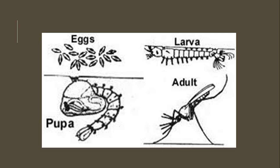Now let's summarize. Anopheles mosquito: eggs are single and boat-shaped. Larvae is a surface feeder and resides below the surface of water. Adult mosquito lies in inclined position or landing position and contains spotted wings.